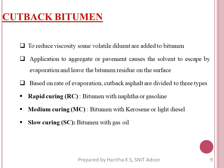Cutback bitumen is produced by adding a volatile solvent to bitumen. When cutback bitumen is applied to aggregate or pavement, by evaporation the solvent will escape, thereby leaving the bitumen residue on the surface. Based on rate of evaporation, cutback bitumen is classified into three classes: Rapid Curing (RC), Medium Curing (MC), and Slow Curing (SC).